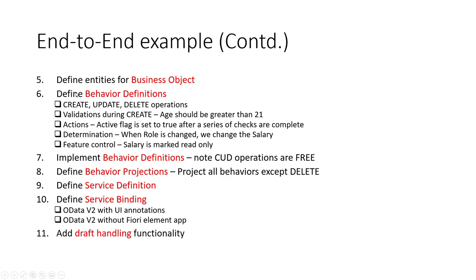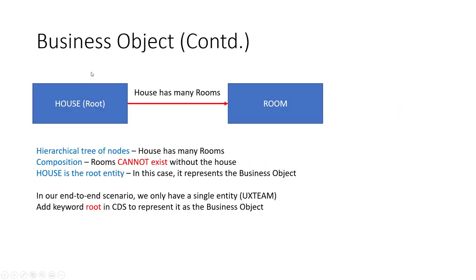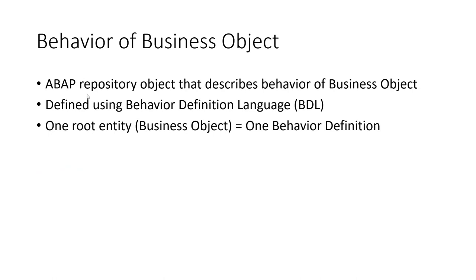Now let's look at step six — behavior definitions. A business object can have multiple behaviors. Whatever it can do, you mark that as the behavior of the business object, and it is defined as an ABAP repository object using Behavior Definition Language (BDL). There is a strict one-to-one mapping: one root entity equals one behavior definition file, and all behaviors of that business object go into that single file.